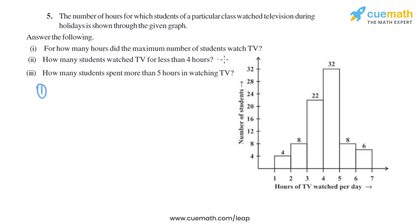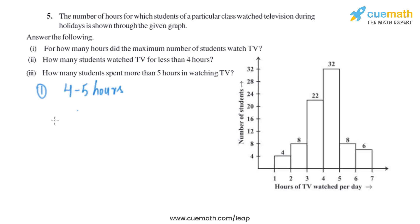Looking at the graph: for 1 to 2 hours there are 4 students, for 2 to 3 hours there are 8 students, for 3 to 4 hours there are 22 students, and for 4 to 5 hours there are 32 students. So the maximum number of students watch TV for 4 to 5 hours — that will be the answer to the first part.